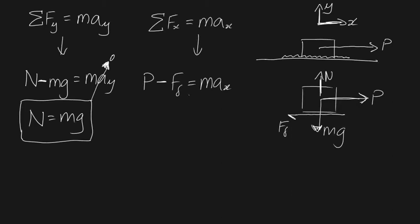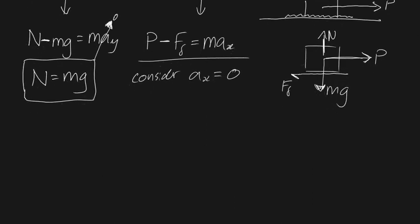What about this? Well, right now, the block could be accelerating in the x direction. We don't know. But for now, let's consider the case where it isn't. Let's consider ax equals zero. We don't know if that's the case. We're going to prove it soon. But for now, let's consider what would happen if that is the case. Well, if that is the case, that would imply that P minus ff is equal to zero, right? Which would also imply that P is equal to your friction force if you bring the friction force over to the right-hand side.